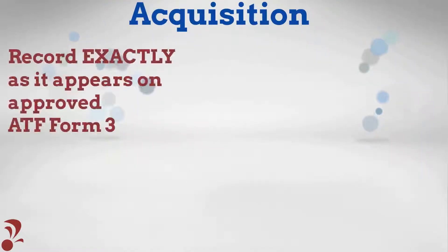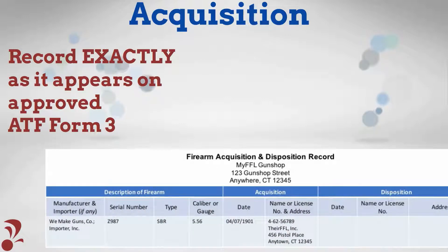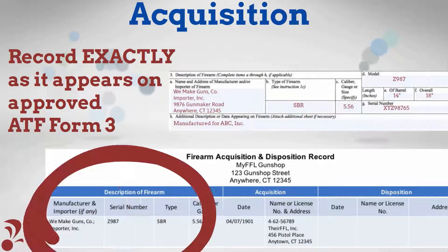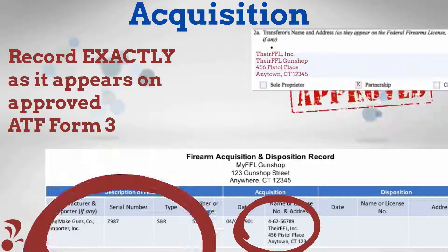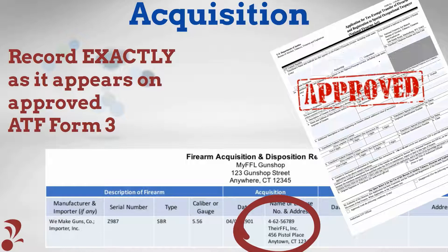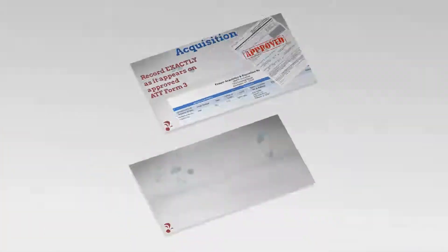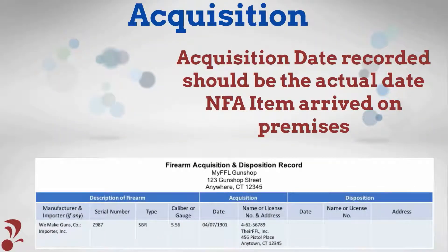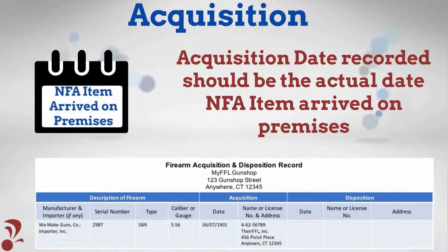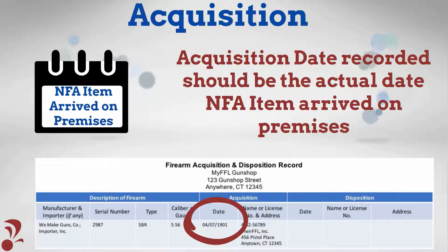Acquisition information recorded in your A&D book should exactly match information recorded in Question 3A and Question 2A on the approved Form 3. The date of acquisition recorded should reflect the actual date items arrived on your FFL premises.